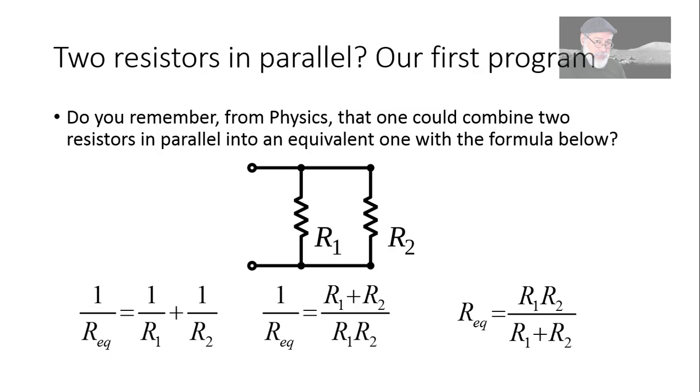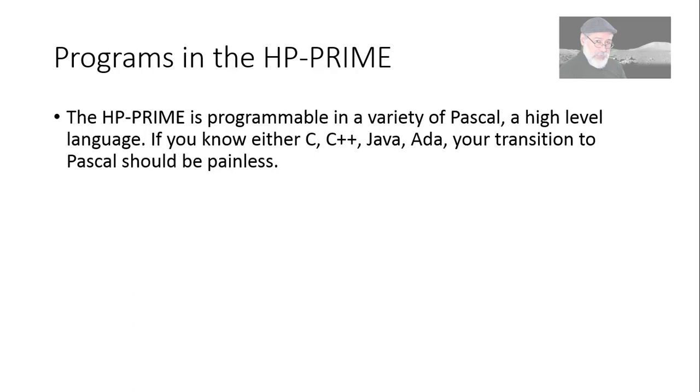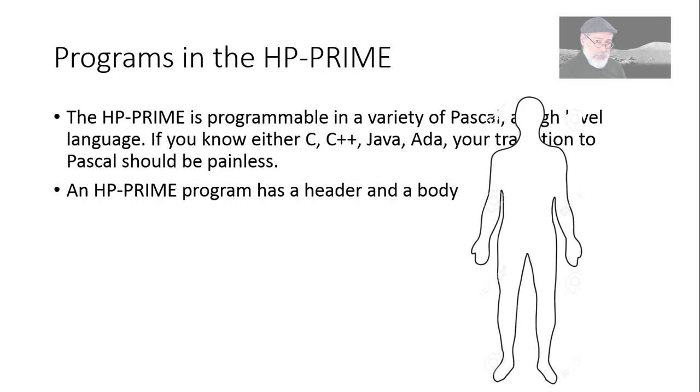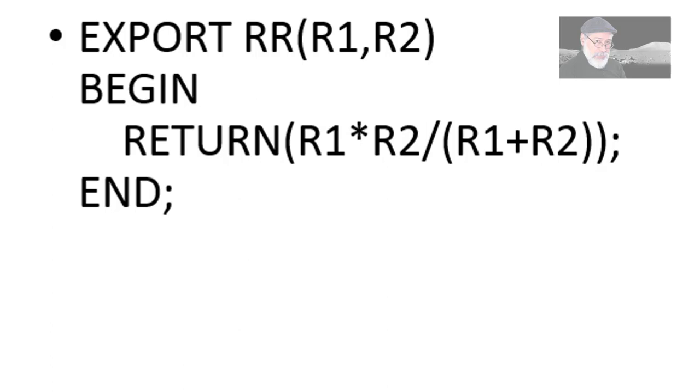In the HP Prime, the programs are written in a variety of Pascal, which is a higher level language. If you know C, C++, C Sharp, or Java, your transition to Pascal should be painless. An HP Prime program has a header and a body. The header exports the name of the program, in this case RR (easy to type, two resistors). In parentheses, the two values as parameters that it will receive, R1 and R2. The beginning of the body is the word begin, the end is the word end with a semicolon.